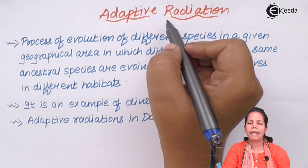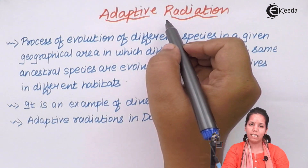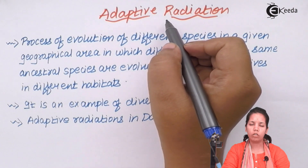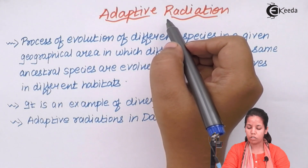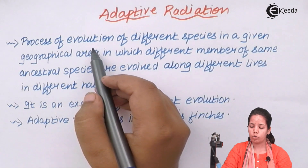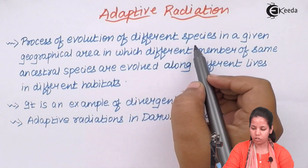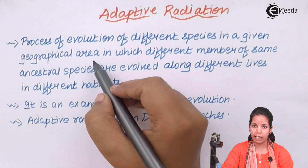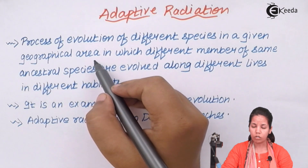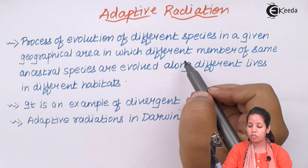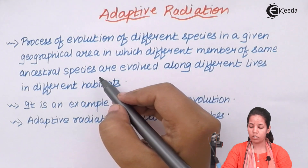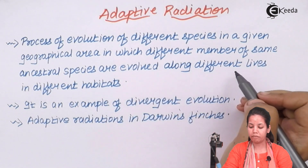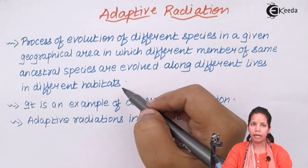Adaptive radiation could be clearly said as a part of Darwin's theory of organic evolution. According to adaptive radiation, it is the process of evolution or change of different species in a particular geographical area — or simply, a habitat — in which different members of the same ancestral species are evolved along different lines and in different habitats.